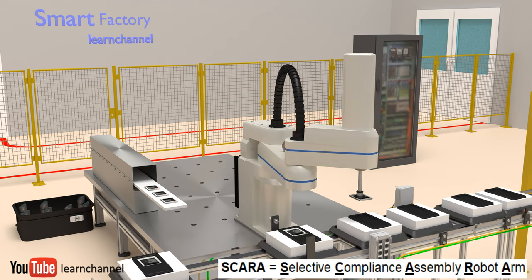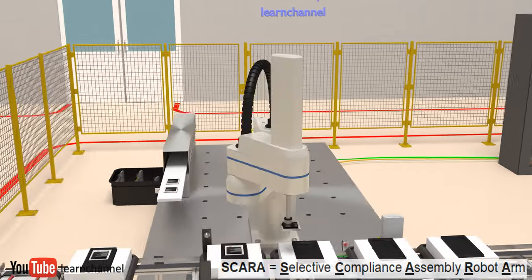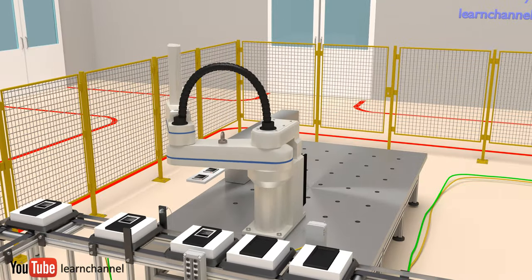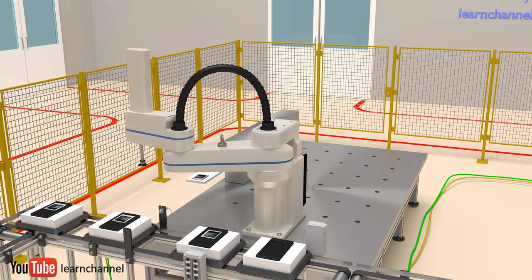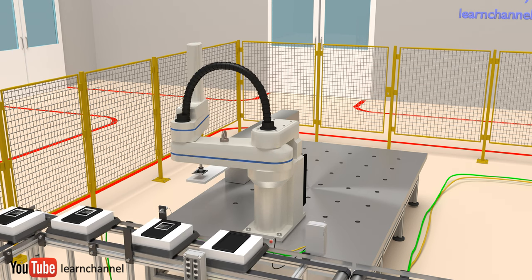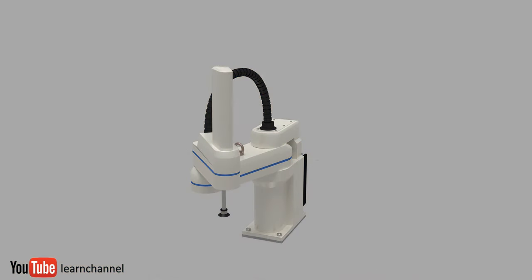Let's watch this SCARA insert these electronic devices into the box with high speed and accuracy. What makes this robot so unique? Let's look at this robot from the top view, where we can see how it gets to its high speed.